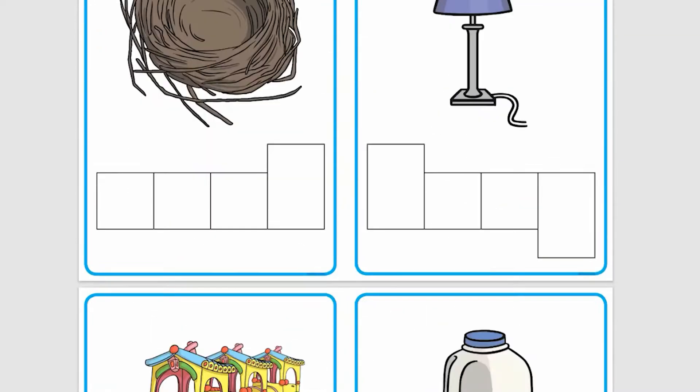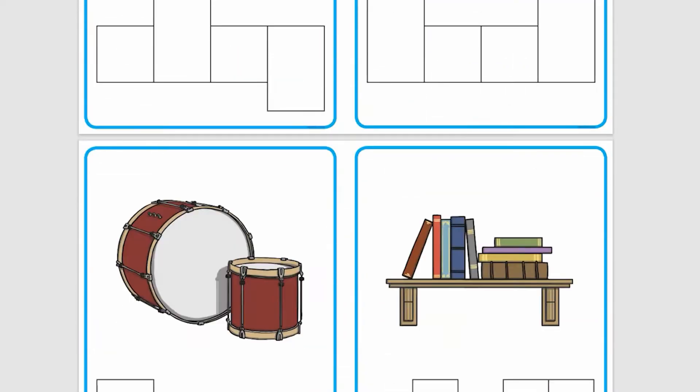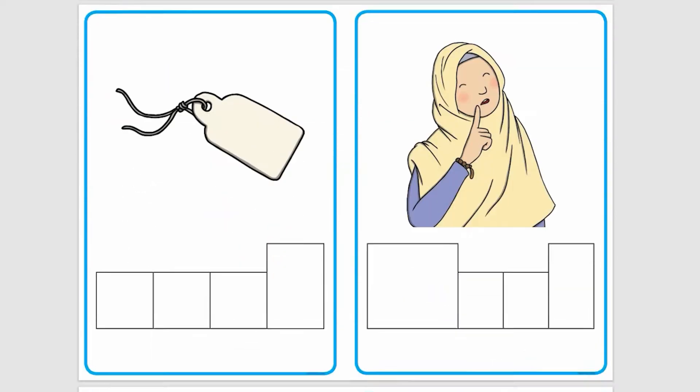Children find it easier to hear the first and the last sound in a word, so these boxes help them see clearly just how many sounds they're listening out for and how many letters they need to write.